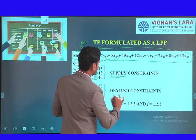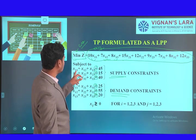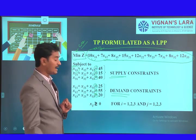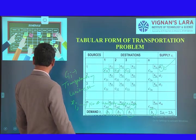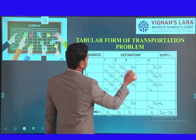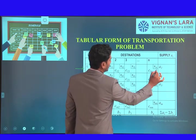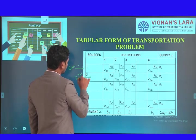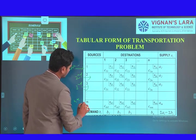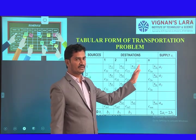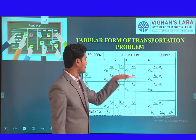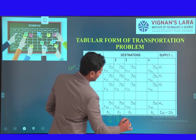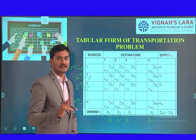We have two types of constraints: supply constraints and demand constraints. For supply constraints, the row variables X11, X12, X13 from the first source give the first constraint; X21, X22, X23 give the second constraint; and so on up to the m-th supply constraint. For demand constraints, the column variables X11, X21, X31 give the first demand constraint, X12, X22, X32 give the second, and so forth. Row constraints are supply constraints and column constraints are demand constraints.